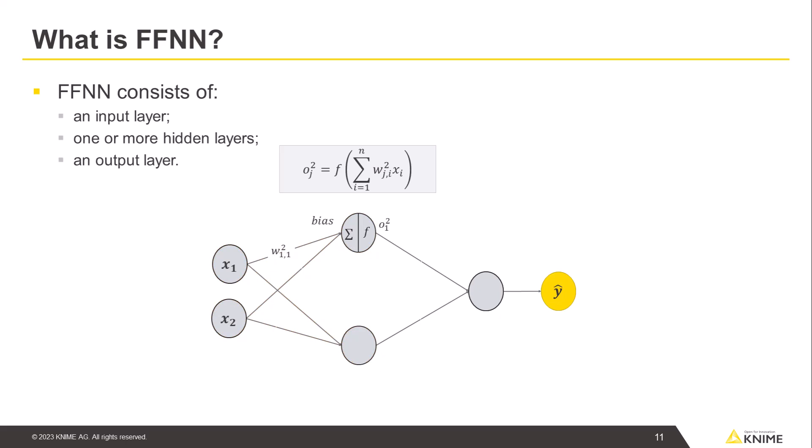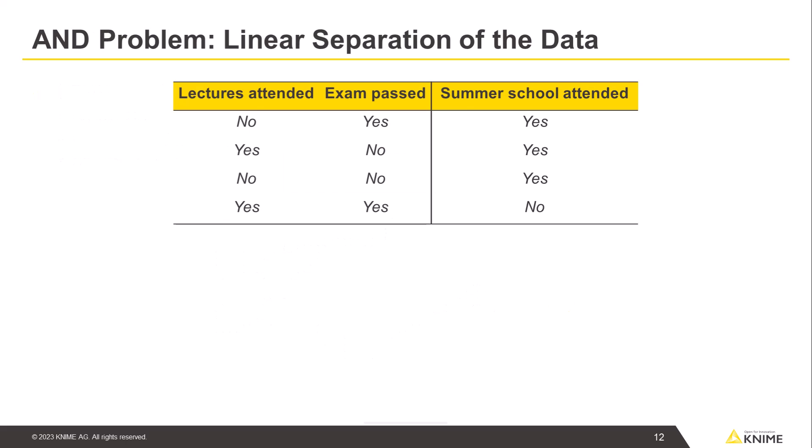Introducing a hidden layer into a network is necessary to solve problems that require nonlinear separation of the data. Otherwise, a single perceptron would do. Let's take a look at an example.